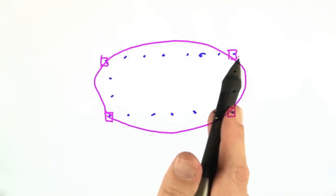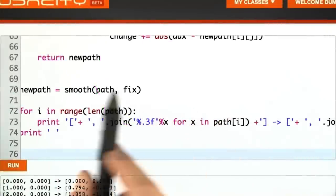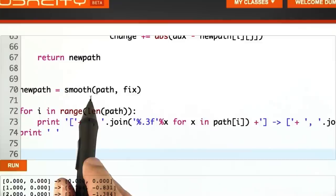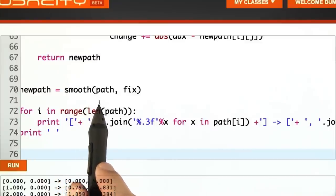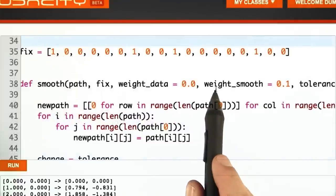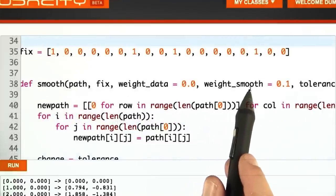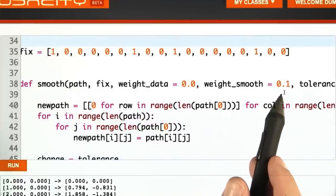So please go to your code and modify the function smooth by adding these new constraints. For the update strength, I suggest you use half of weight smooth for each update. So in total, you add another 0.1 as update strength.